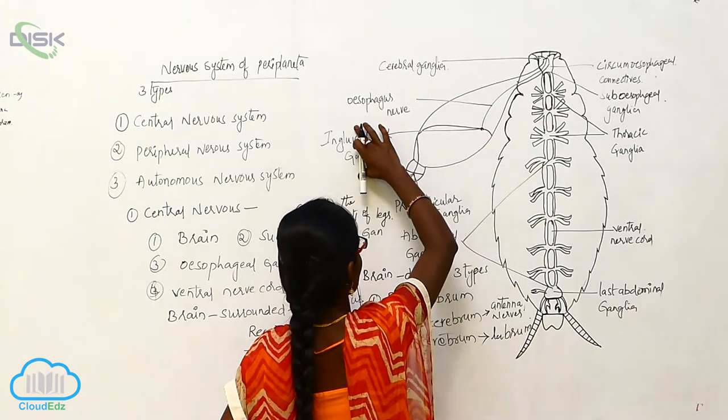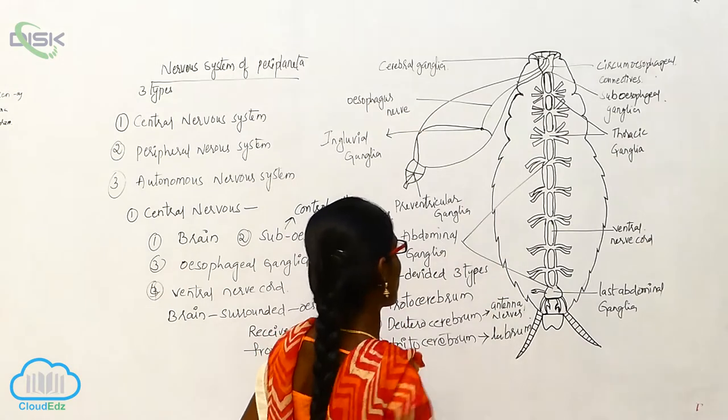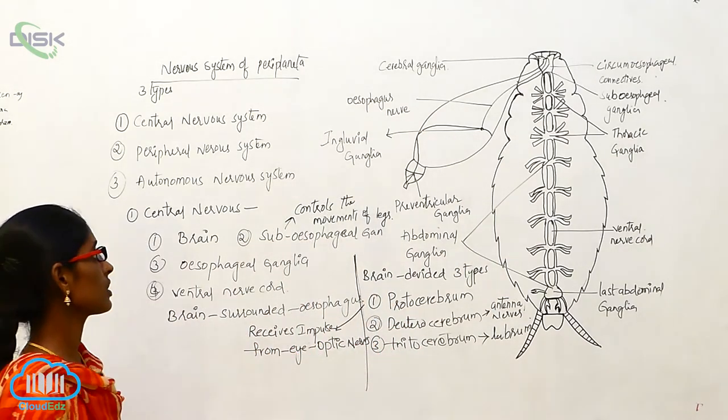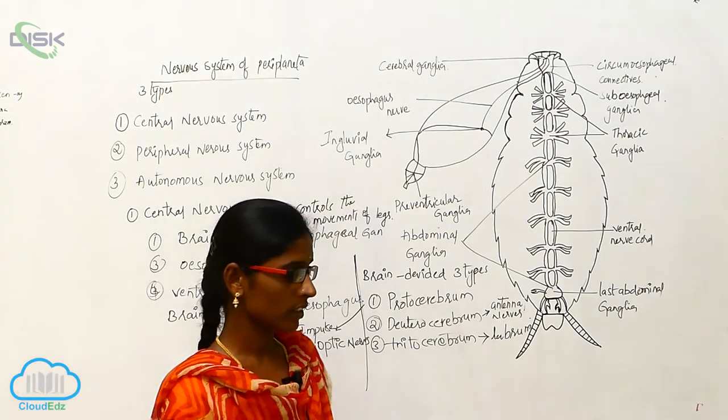Esophagus nerve, inglovial ganglia, and preventral ganglia are present in the central nervous system, peripheral nervous system, and autonomous nervous system.